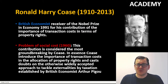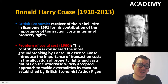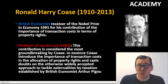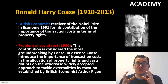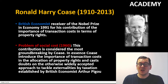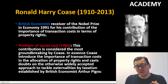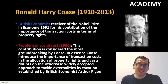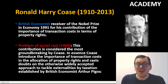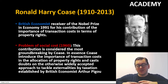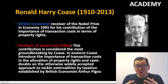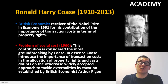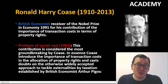Ronald Harry Coase was a famous British economist and receiver of the Nobel Prize in 1991 for his contribution on the importance of transaction cost when it comes to property right allocation. One of his most famous contributions is his article from 1960 called 'The Problem of Social Cost,' where he stipulates his groundbreaking considerations regarding transaction costs and the importance of transaction costs when we talk about solving externality problems.